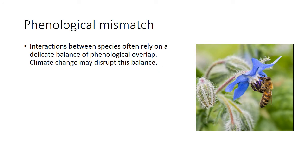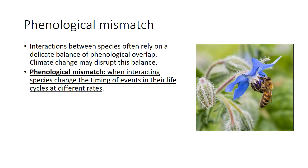Interactions between species often rely on a very delicate balance of phenological overlap, particularly for events that may occur over a very short period of time such as flowering. Climate change has the potential to disrupt this delicate balance, and we refer to this disruption as phenological mismatch — when interacting species change the timing of events in their life cycles at different rates that impact their interaction.